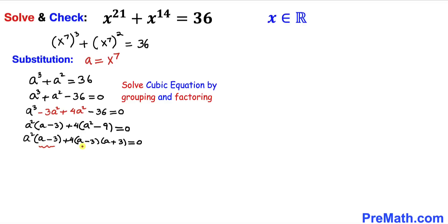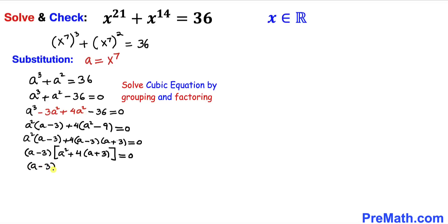Now we can see (a - 3) and (a - 3) are in common. So I factor out (a - 3), giving (a - 3)[a² + 4(a + 3)] = 0. Distributing the 4, this becomes (a - 3)(a² + 4a + 12) = 0.